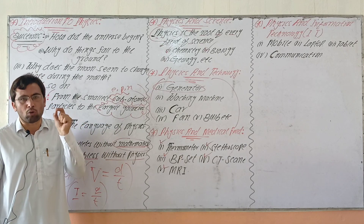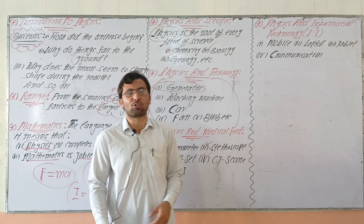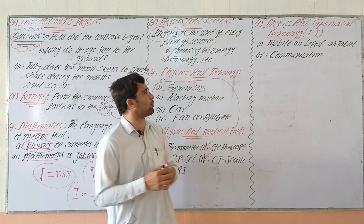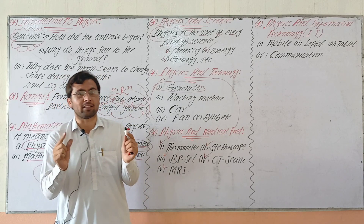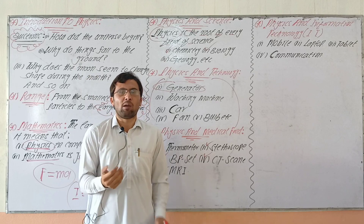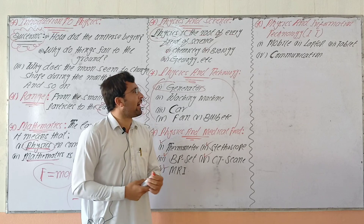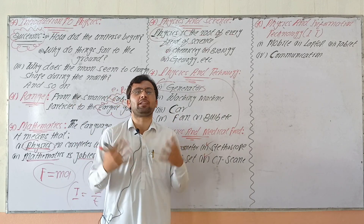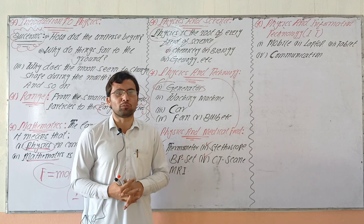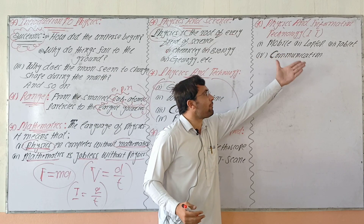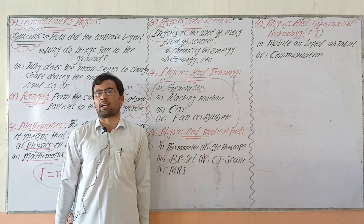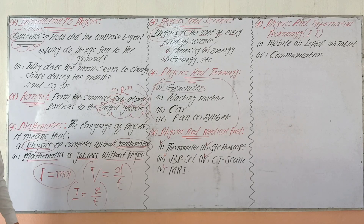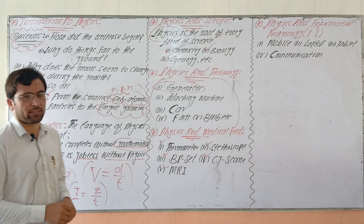Physics and information technology — mobile phones, laptops, tablets, and communication devices are all based on physics. Computers, screens, and all digital devices are built on physics principles. Physics is the most important subject. In the next lecture, we will discuss the three branches of physics and define them one by one. Thank you.